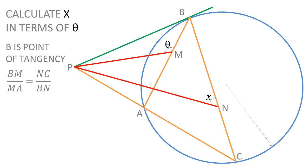Hello, let's solve this problem. From the figure where B is the point of tangency and the ratio between BM and MA is equal to the ratio between NC and BN, we have to calculate X in terms of theta.